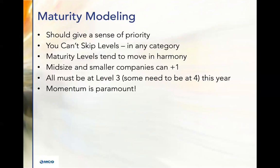Maturity modeling should give you a sense of priority: what comes next, what's important, how other companies have done it, what their path has been. Nobody's best practice across the board — there's always a leader you can look to in something. You can't skip levels and say we're a one, let's be a five this year — it takes a while. At least six months to move a level, and that's if you're doing things right. Maturity levels tend to move in harmony across technology, strategy, architecture, and processes. You can't be a one in governance and a five in technology — it just doesn't work that way.